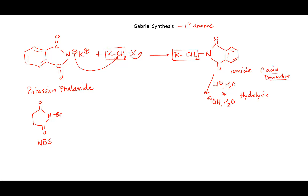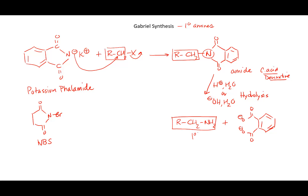In the next chapter we'll find that treating any carboxylic acid derivative with acid in water or base in water causes hydrolysis - cleavage by water. This amide will be converted to the primary amine, and the phthalimide ends up as two carboxylates. We prefer using hydroxide for this step, and I'll explain why.